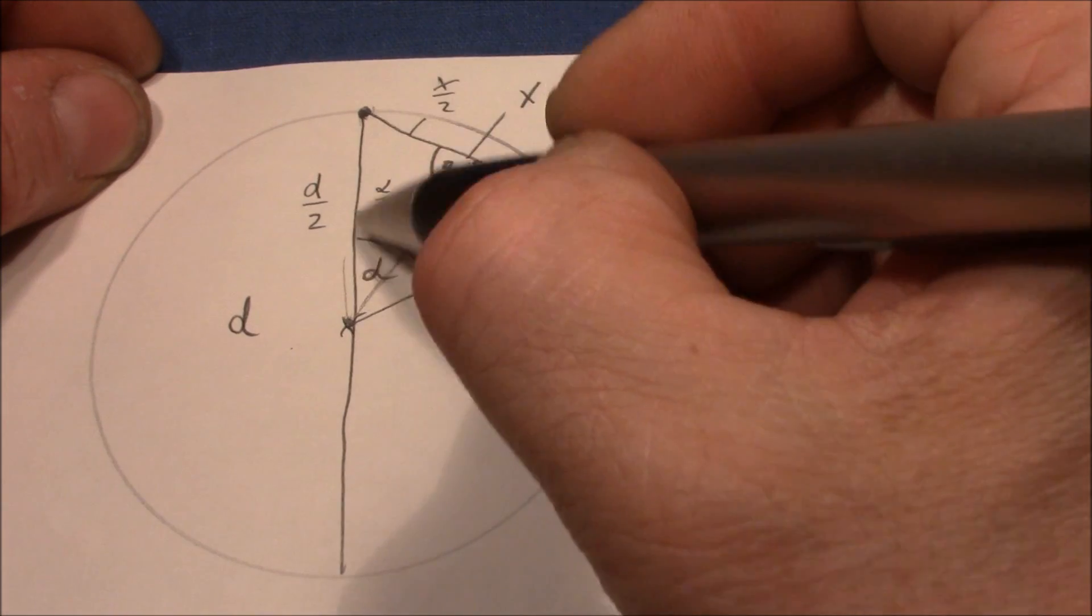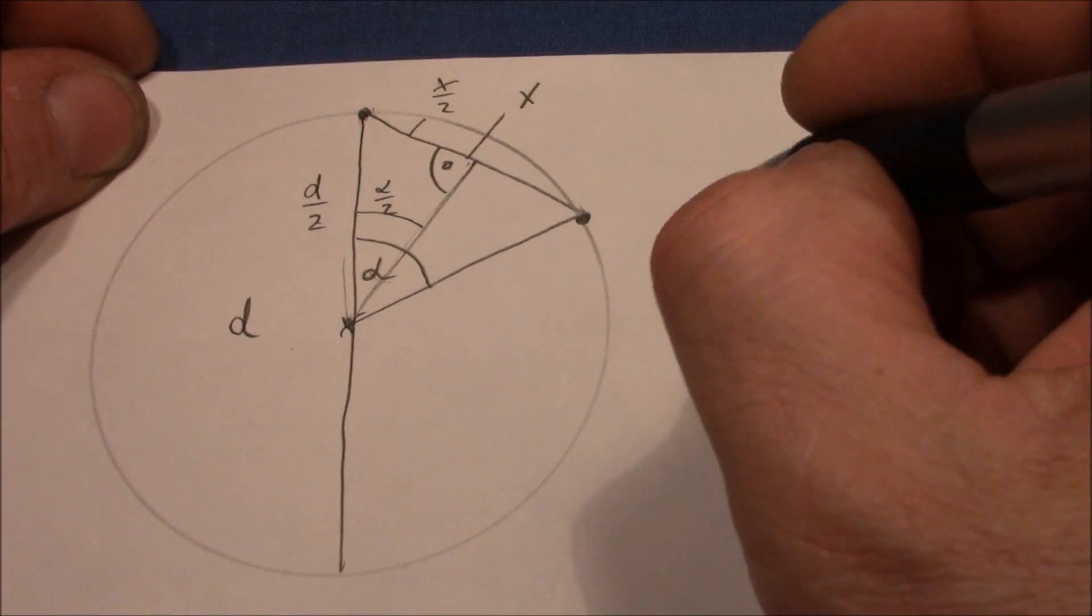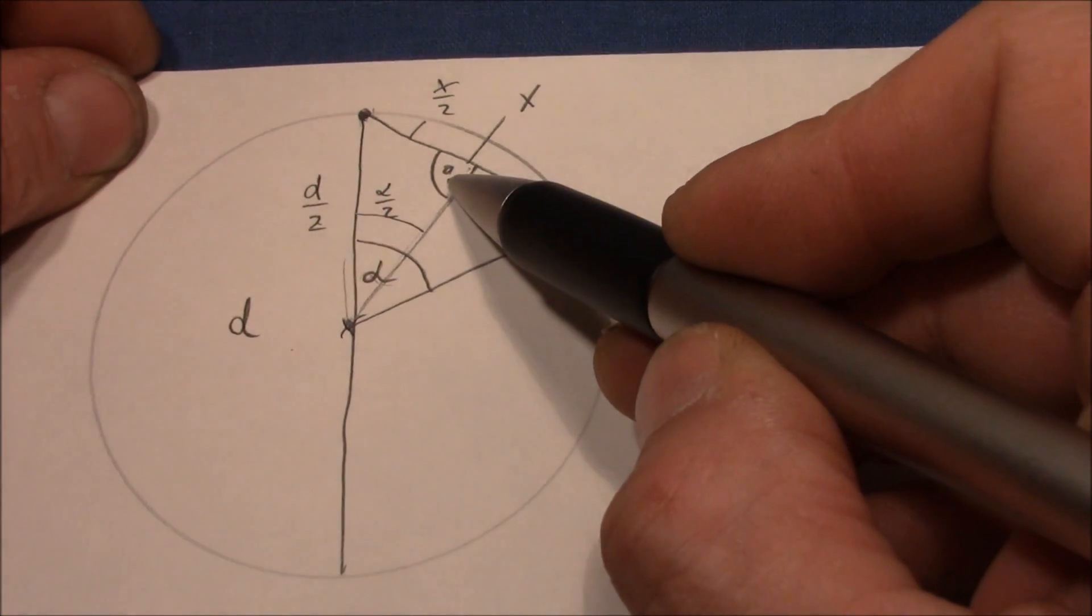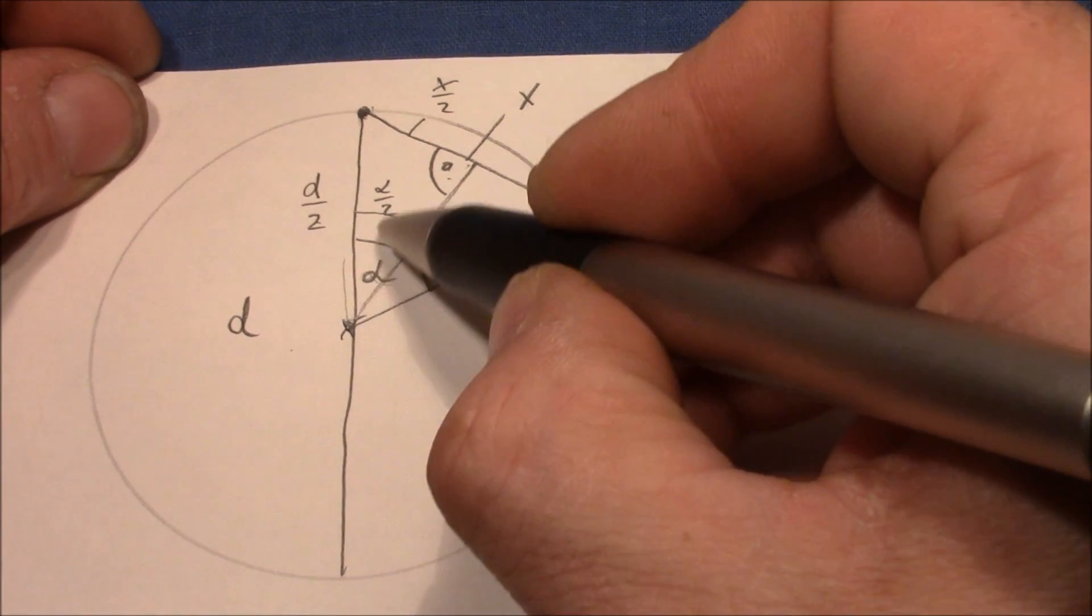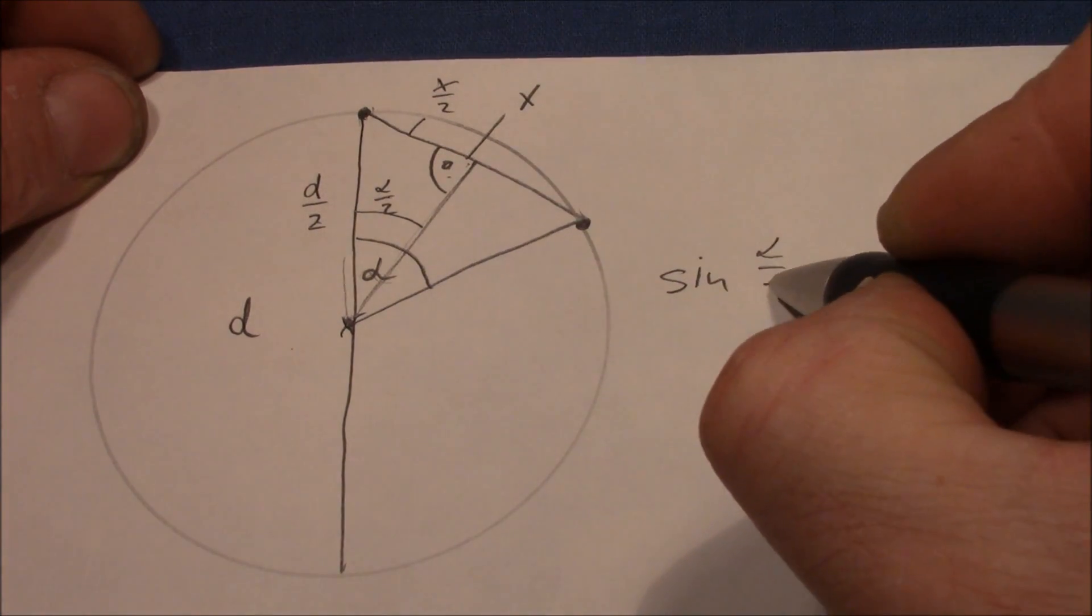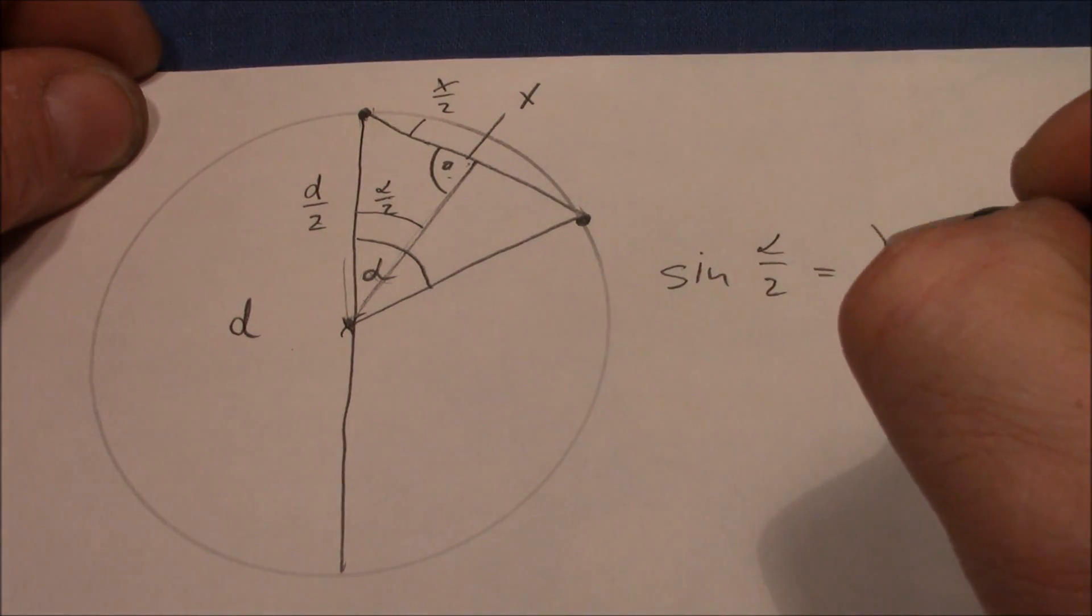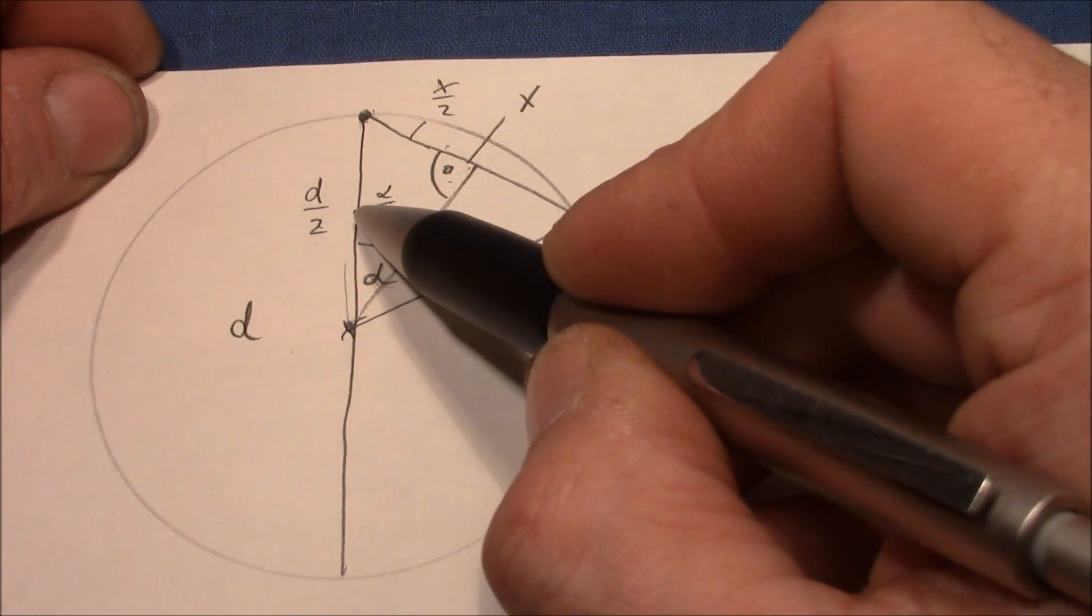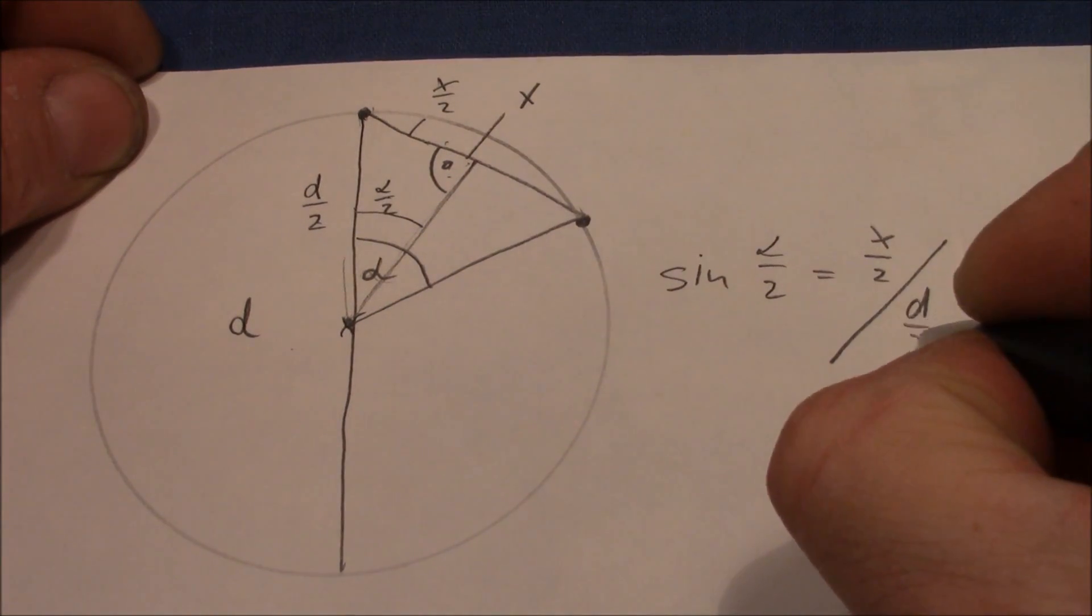That this is x half, and we know that this length is d half. And therewith we can also simply write down the sinus definition in a right angle triangle, which is sinus of the angle equals the cathetus divided by the hypotenuse, which is d half.